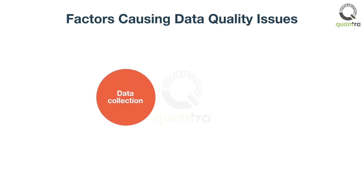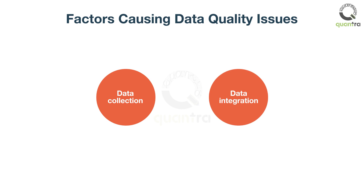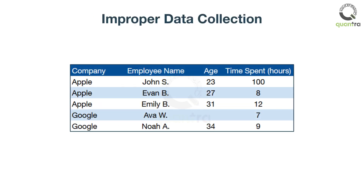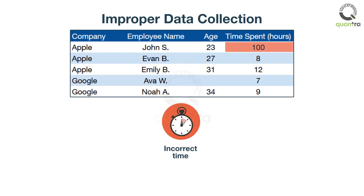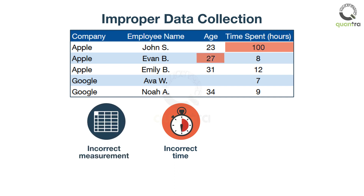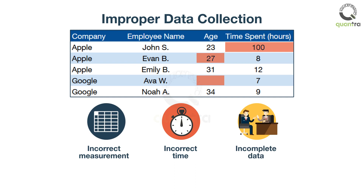It can occur during data collection or data integration. Consider that you are recording the average time that employees spend in a cafeteria weekly across companies. You recorded 100 hours instead of 10 hours, or the unit of measurement was recorded incorrectly. Also, if you are interviewing, someone may choose not to respond to certain questions, which leads to missing values.